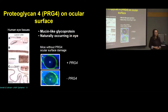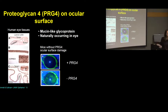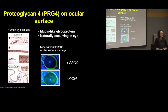Proteoglycan-4, or PRG4 — also known as Lubricin — is a mucin-like glycoprotein that has been discovered naturally on the eye. In this figure, you can see two pictures of mouse eyes: the top one is wild-type mice where PRG4 is visible, whereas in PRG4 knockout mice, you can clearly see ocular surface damage. This demonstrates the importance of PRG4.